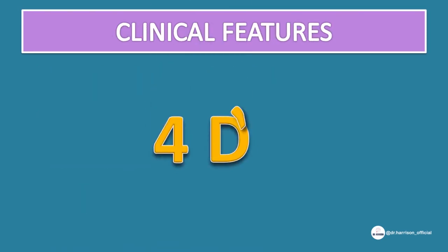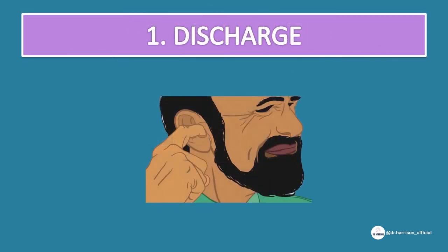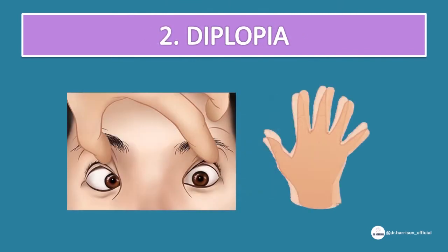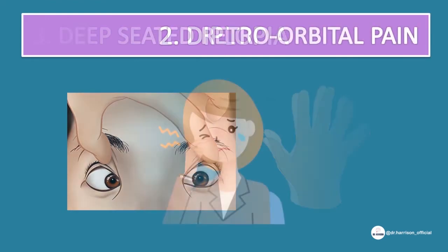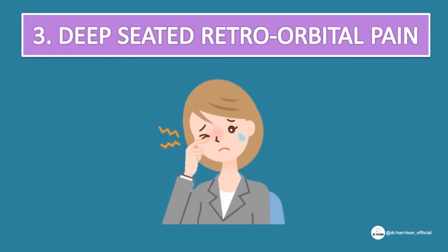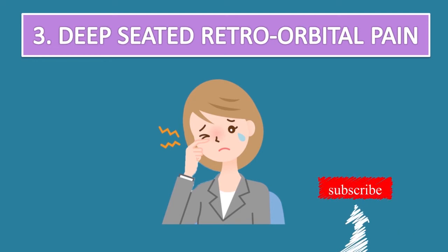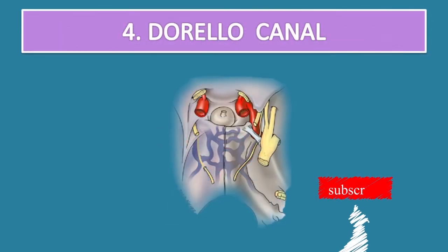The clinical features can be easily remembered by the four Ds: 1. Discharge — discharge from the ear due to chronic infection. 2. Diplopia — due to lateral rectus palsy involving the abducens nerve. 3. Deep-seated retroorbital pain — due to involvement of the trigeminal nerve. And finally, 4. Dorello's canal — through which the abducens nerve passes.